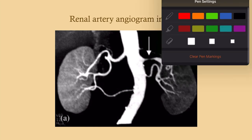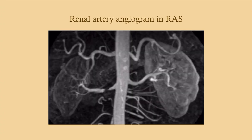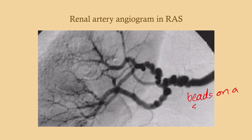If it's bilateral or refractory unilateral, then do stenting — an ACE inhibitor is not going to be good here; it will tank your GFR. Here's an angiogram showing the stenosis. You can see the narrowing here. This pattern — the 'beads on a string' appearance — represents fibromuscular dysplasia, and this is commonly bilateral.